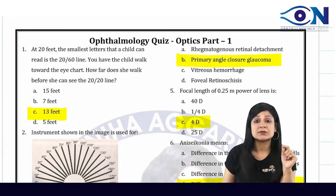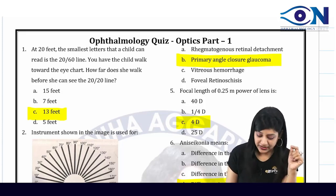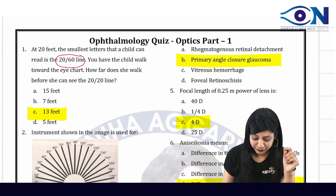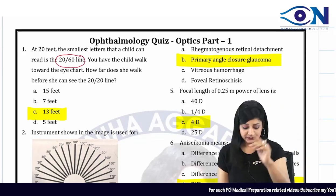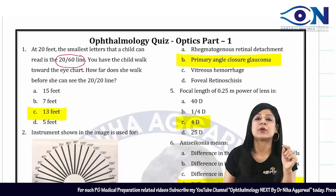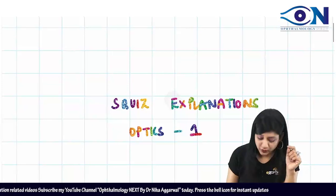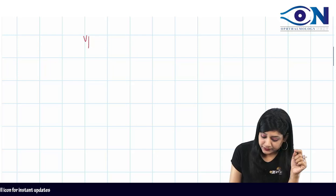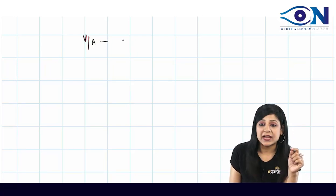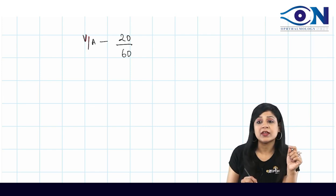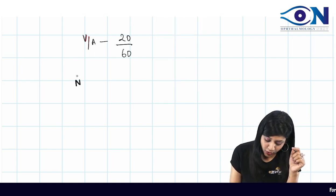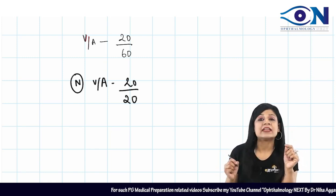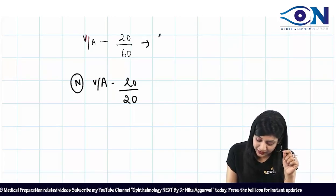Question 1: At 20 feet the smallest letters a child can read is 20/60. Now the child walks towards the eye chart — how far does she walk before she can see 20/20? The visual acuity of this child is 20/60, and normal visual acuity is 20/20, so the child's visual acuity is one-third of normal.